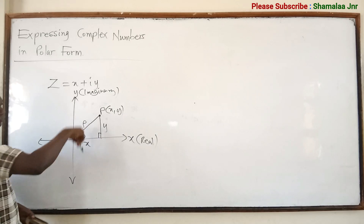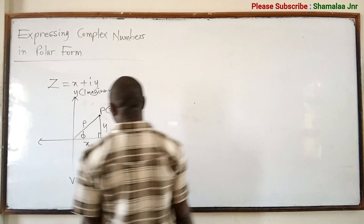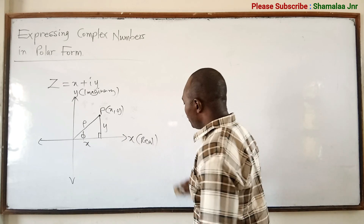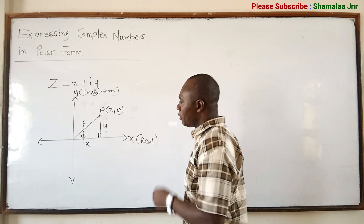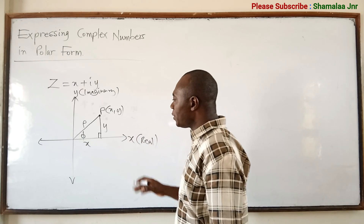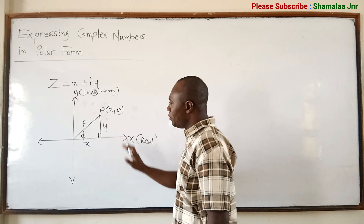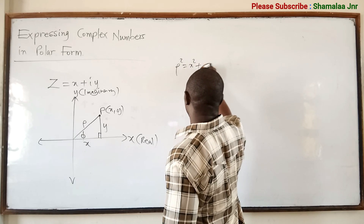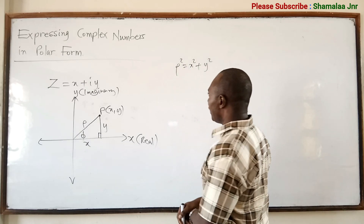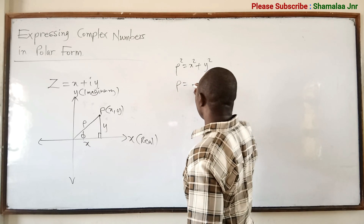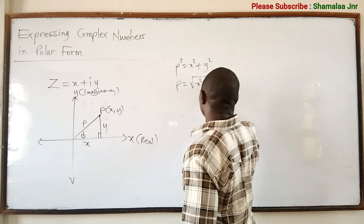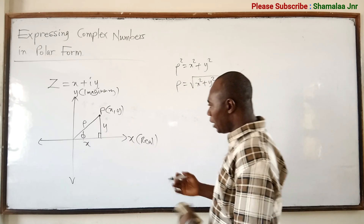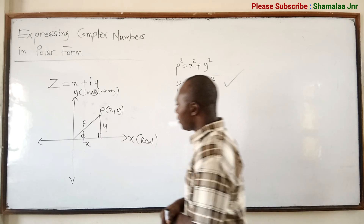From the diagram, using Pythagoras's theorem — which states that in any right-angled triangle the square of the hypotenuse is equal to the sum of the squares on the other two sides — we can say that rho squared is equal to x squared plus y squared. It means that rho is equal to the square root of x squared plus y squared.